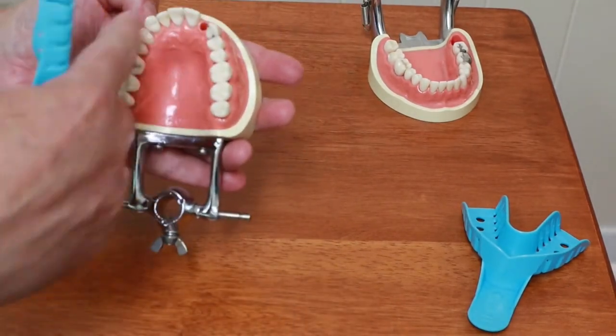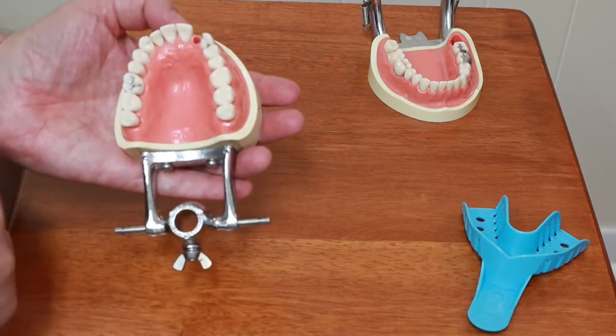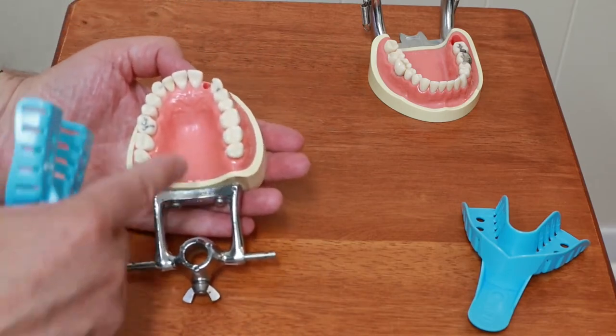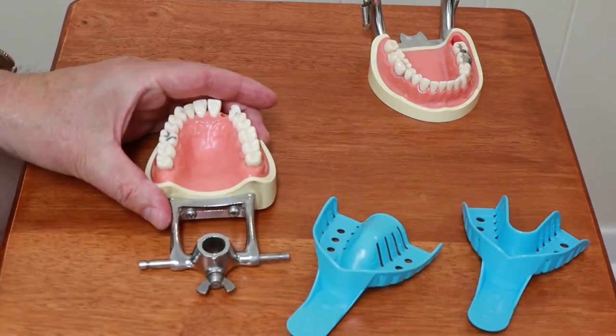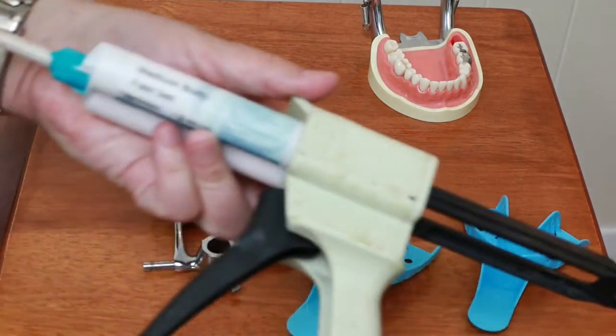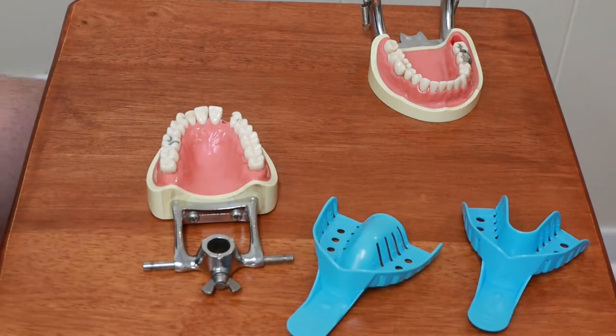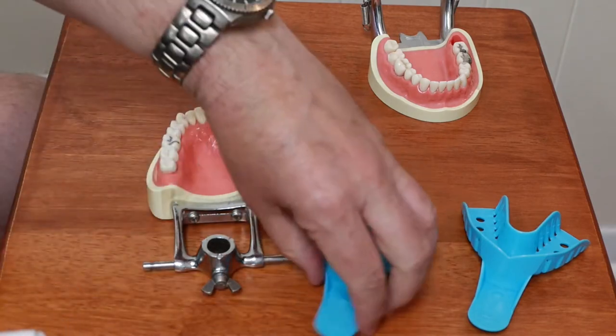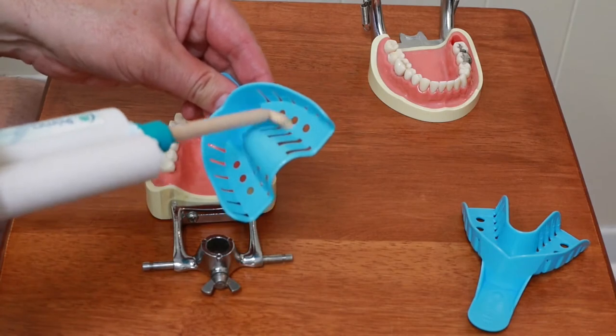For the upper mold, since this is where the Maryland bridge is going to be, I'm going to use a material called vinyl polysiloxane. It's a rubber material that's going to give me better accuracy and a very stable model. It comes in this dispensing gun, just fill up the tray.